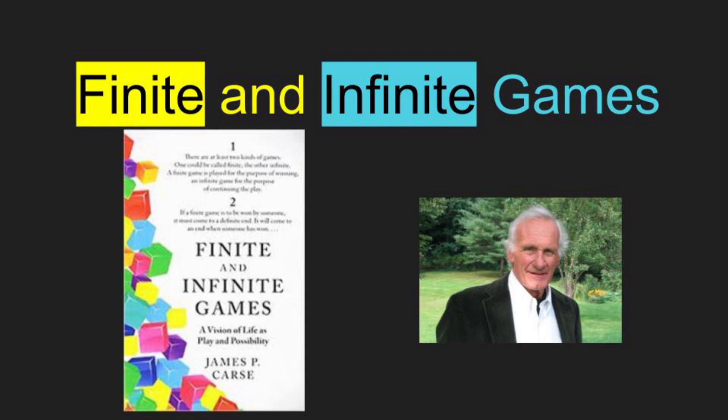This book essentially argues that there are two types of games or strategic social interactions: finite and infinite games. The book has been really influential, but as anyone who's read it knows, it's a really hard book to get through. It's written in an aphoristic style, meaning short bursts of paragraphs that don't necessarily overtly connect together, so you really have to think through and puzzle through it. Here I'm going to give you my interpretation of Carse's general message.